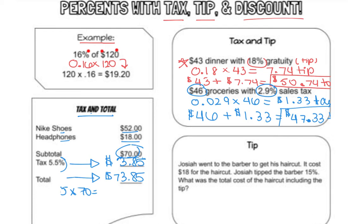Now we're going to do tip. Josiah went to the barber to get his hair cut. It cost $18 for the haircut and Josiah tipped the barber 15%. What was the total cost of the haircut including the tip? We need to find 15% of $18. 15% as a decimal is 0.15, times $18.